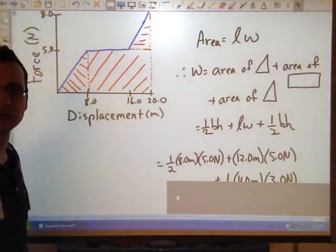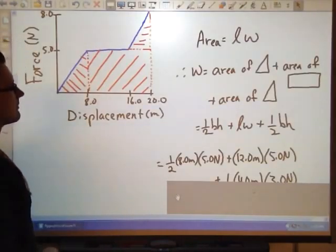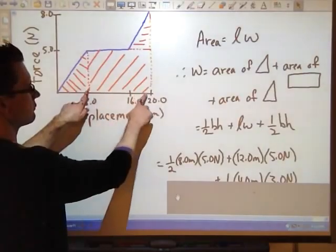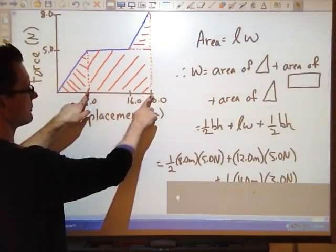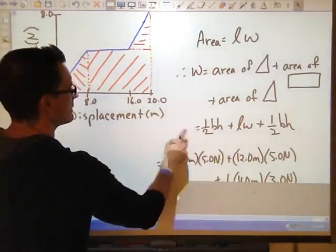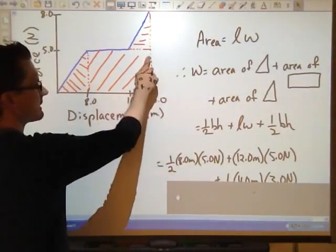Area of a rectangle, length times width, half the base times the height. So in looking at these values here, I have a half of my base, which is 8. Height is 5. So a half of 8.0 meters times 5.0 newtons.